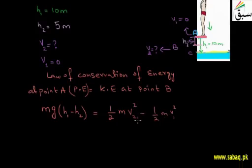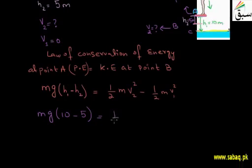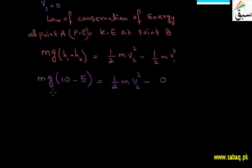Since the diver is at rest at point A, the kinetic energy term one-half M V1 squared equals zero and drops out. We don't know M directly, but the weight W is given as 750 N. Since W equals Mg, and g equals 10 m/s², we can find M: M equals 750 divided by 10, which gives M equals 75 kg.